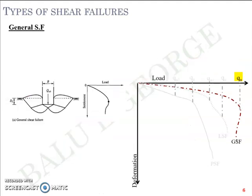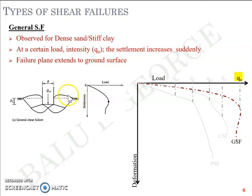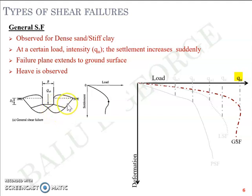General shear failure is observed for dense or stiff soil — either dense sand or stiff clay. At a certain load intensity, the settlement increases suddenly and the failure plane extends all the way up to the ground level, resulting in a heave of soil at the ground surface. In short, when a foundation on dense sand or stiff clay is loaded, the failure plane mobilizes, extends to the ground surface, and the soil heaves upward.